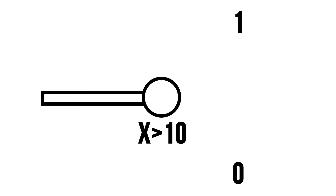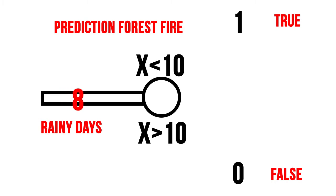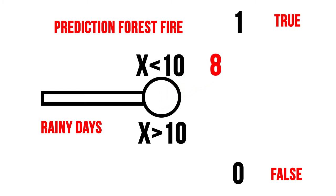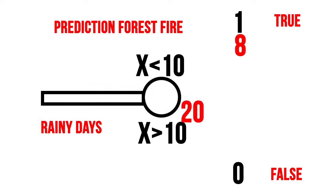For example, for all numbers greater than 10, the neuron gives out 0, and for all numbers less than 10, it gives out 1. So this could be an example where we have data for rainy days and we are naively predicting forest fires. If there were less than 10 rainy days this year, we predict a forest fire and give out the output of 1. If more than 10, then a forest fire is unlikely and the output is 0.